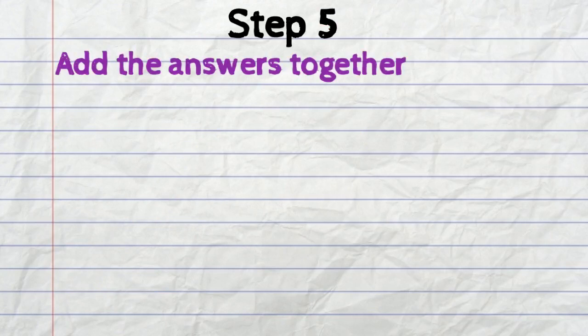And step number five. We add the answers together. So the tens and the ones that we've added. 30 plus 9 equals 39.